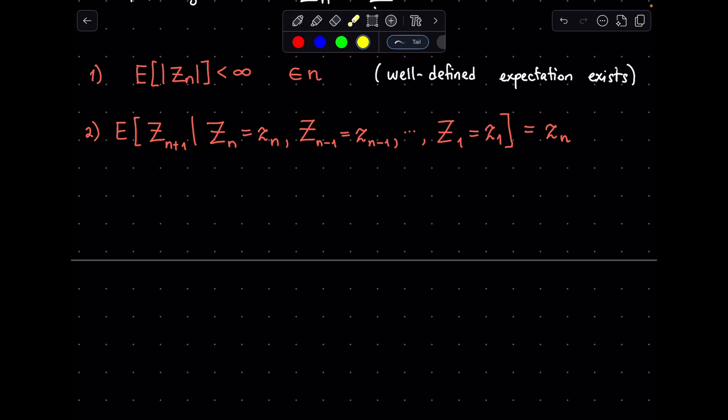Actually, this can be extended to the later steps as well. Since z_{n+1} is expected to have z_n, and applying this condition again for z_{n+2} should give the expected value of z_n as well for that next step. Therefore, in general, we say that the expected value for some step m where m is larger than n, given the current value of z_n and the previous history, should be equal to simply z_n.